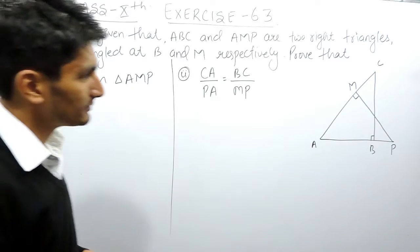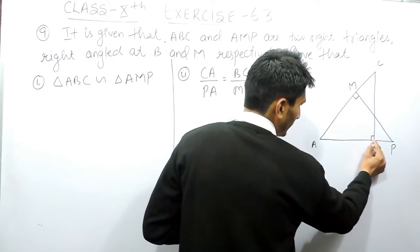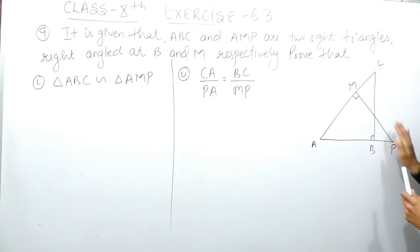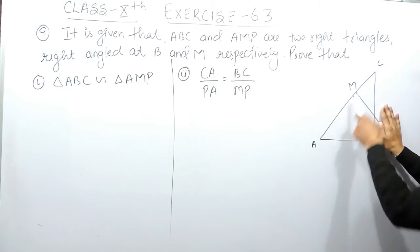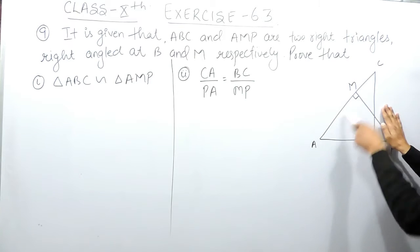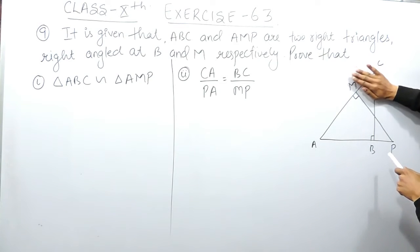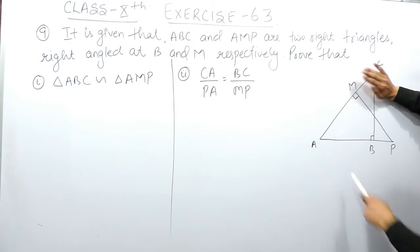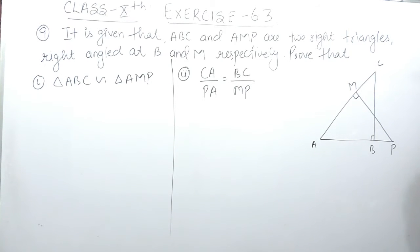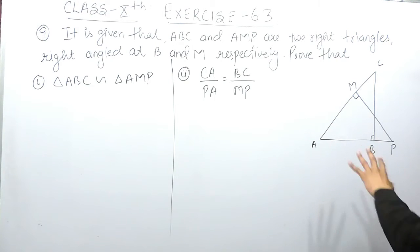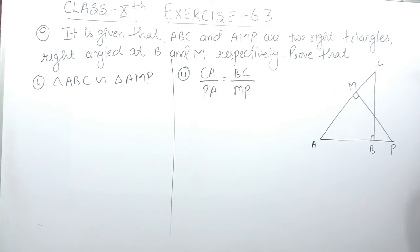Triangle ABC is this one — this is the first triangle. You have to prove that triangle ABC is similar to triangle AMP. To prove these two triangles similar, you need to prove that two angles of one triangle are equal to two angles of the other triangle.